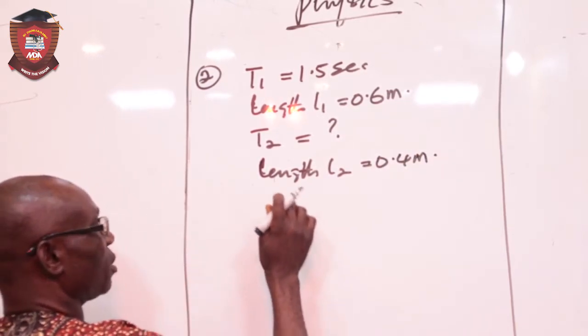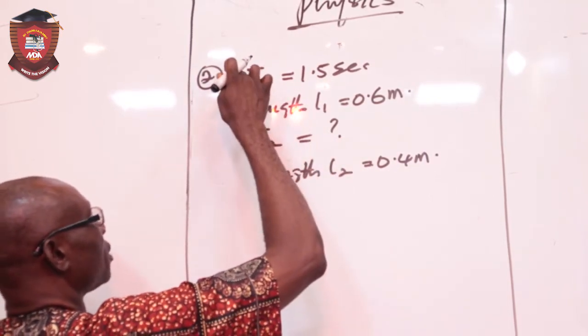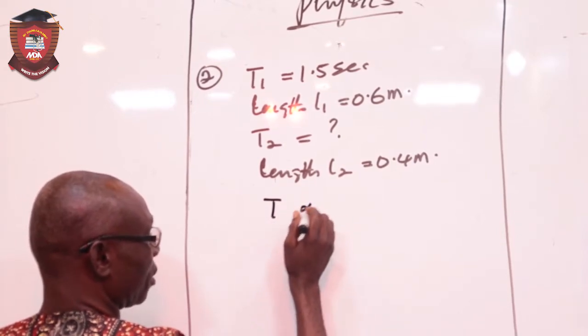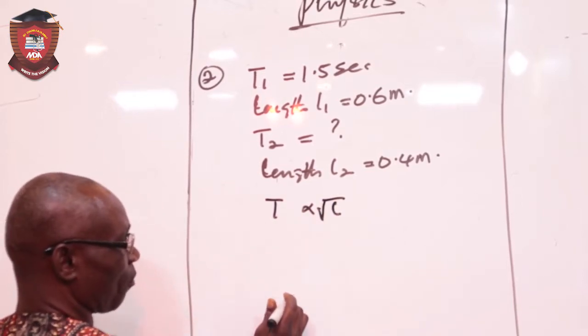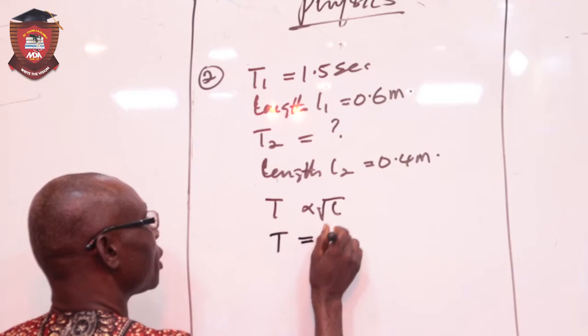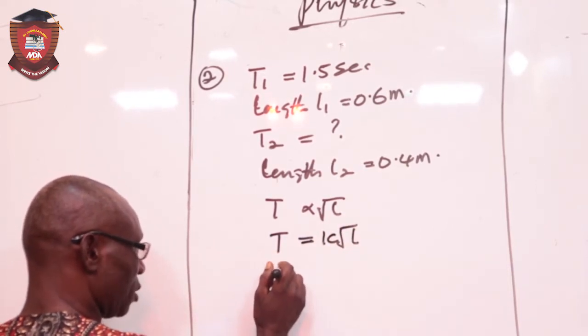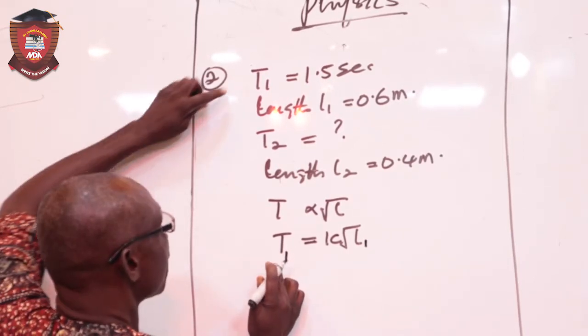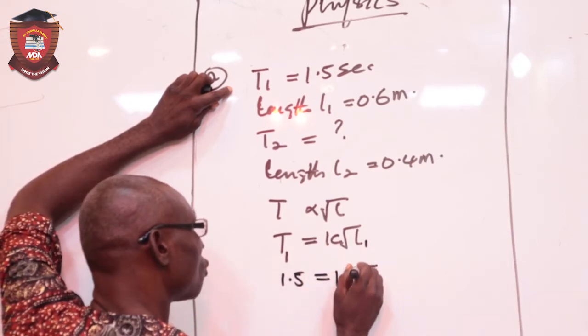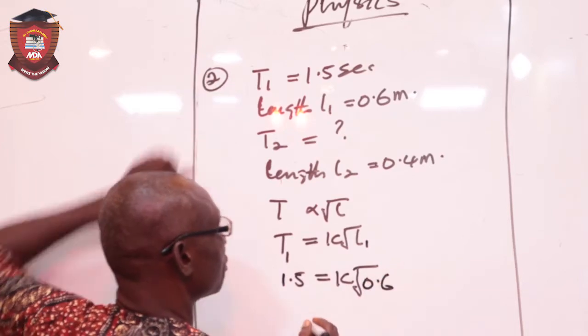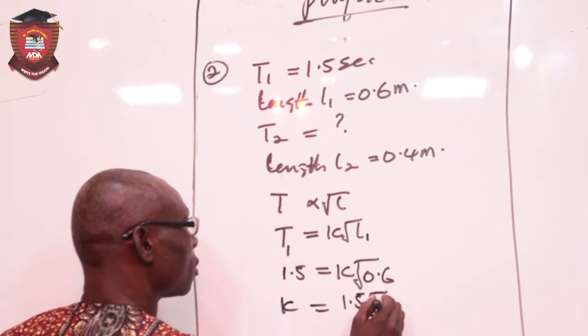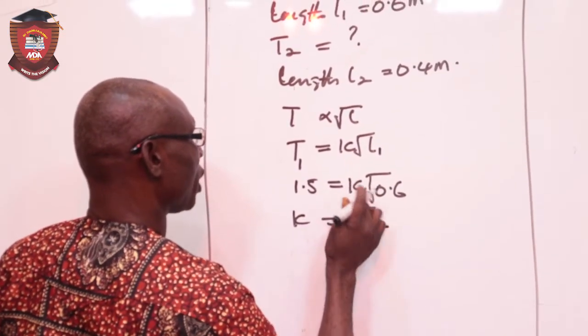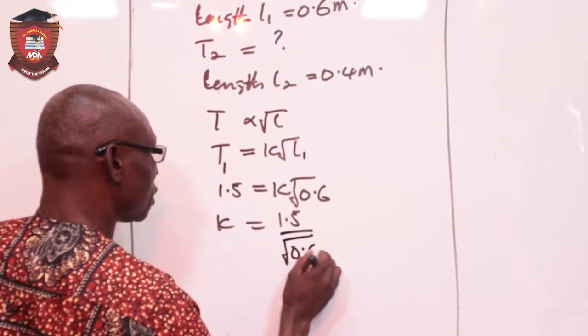Then, for us to obtain this period 2, we now relate the T1 and L1. And T and L, period and the length is related by, that the period is directly proportional to the root of L. So I can now obtain T is equivalent to K root L. Then, meaning that T1 is equivalent to K root of L1. I can substitute to determine K. So this one now, the T1 is 1.5, K is unknown root. L1 is 0.6 meter. Then, the value of K will now be 1.5 over root of 0.6. This is the constant.